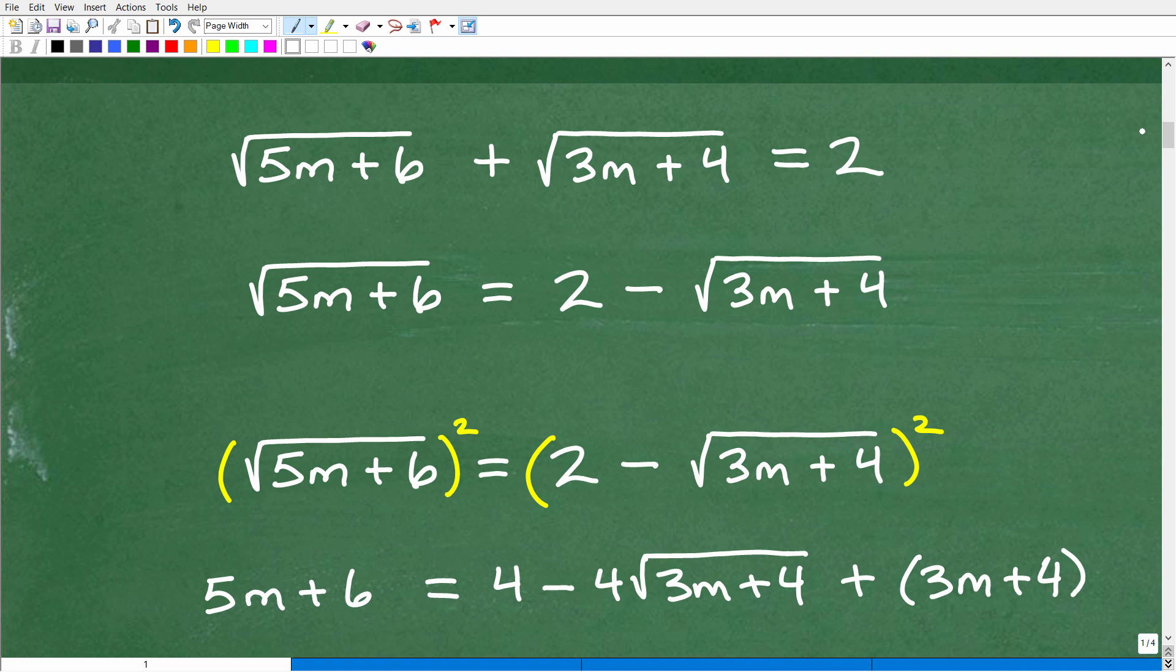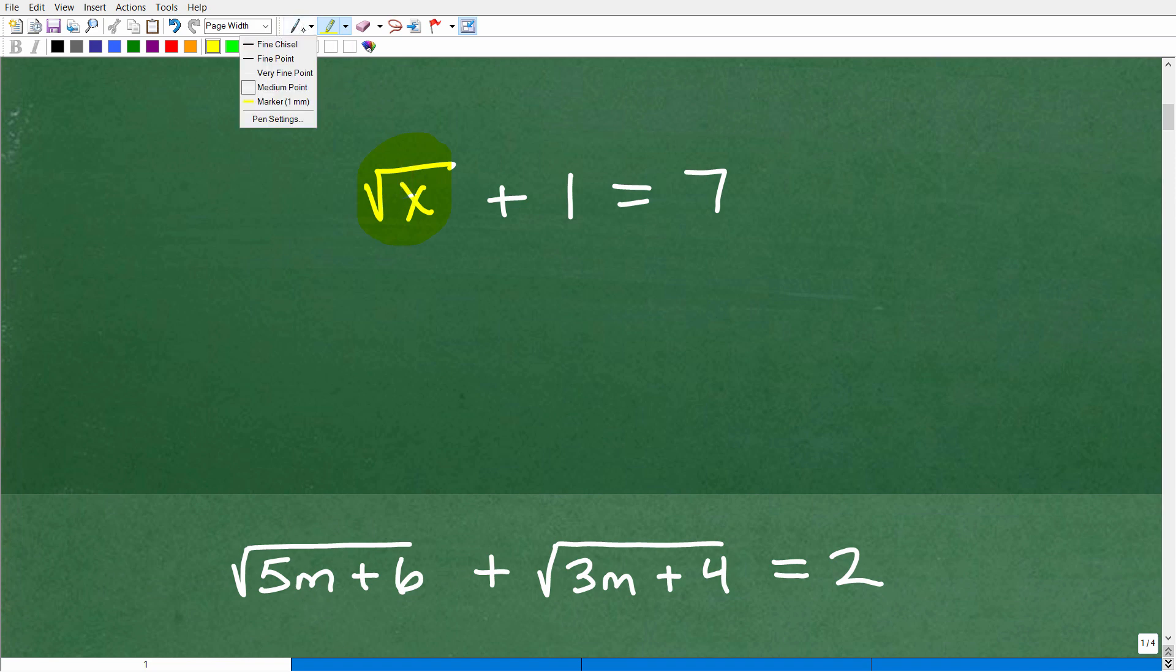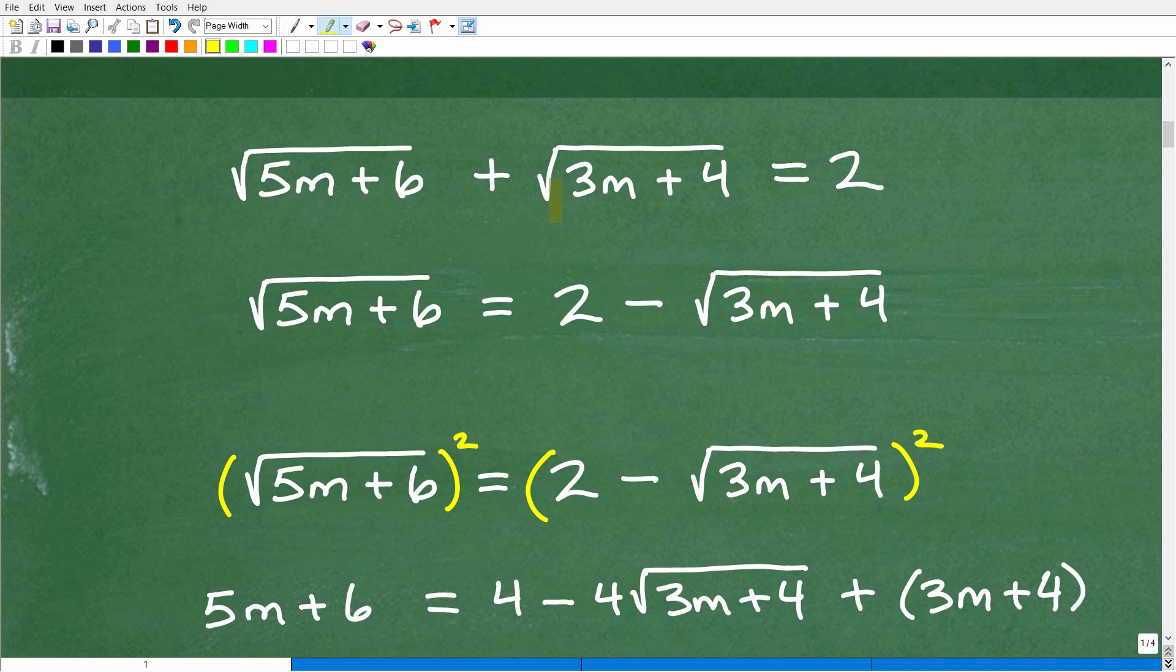So when you're solving a radical equation, what you need to do is isolate the radical. Now, we have two radicals here. Let me just show you something real quick. If I had the square root of x plus 1 equals 7, what you want to do is get this radical all by itself. So I could do that by moving this 1 to the other side so I can get the square root of x is equal to 6. Now, at this stage, what you want to do is square both sides. However, if you look at this, this is easy because I have one radical to isolate. Then I could square both sides. But in this situation, I got two radicals. So this is going to require us to do a lot more work.